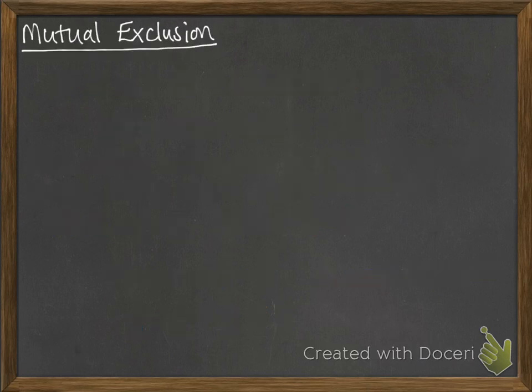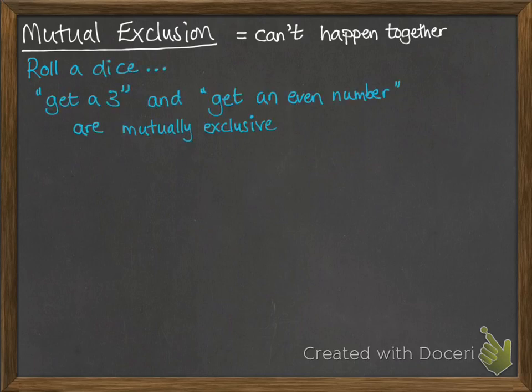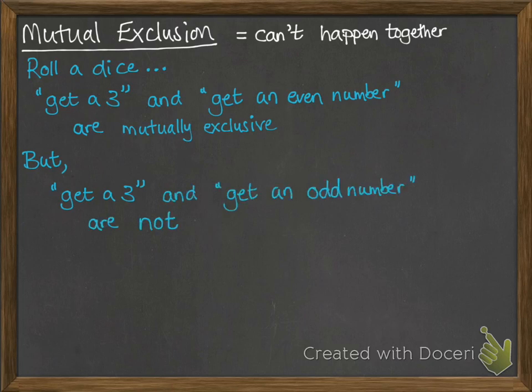Next, let's look at mutual exclusion. This is when two things can't happen together — we call them mutually exclusive. For example, when rolling a dice, getting a 3 and getting an even number are mutually exclusive: they can't happen at the same time, there are no possibilities satisfying both. However, the events of getting a 3 and getting an odd number are not mutually exclusive, because 3 is odd — if we roll a 3, we satisfy both of those things.